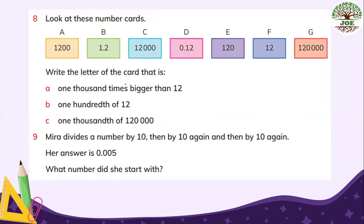Number 8. Look at these number cards. These are number cards. And write the letter for the card that is. For part A, B, C, we have to choose from these numbers. Part A. 1,000 times bigger than 12. It means 12 times 1,000. So the number is 12,000. This is C, C for A.